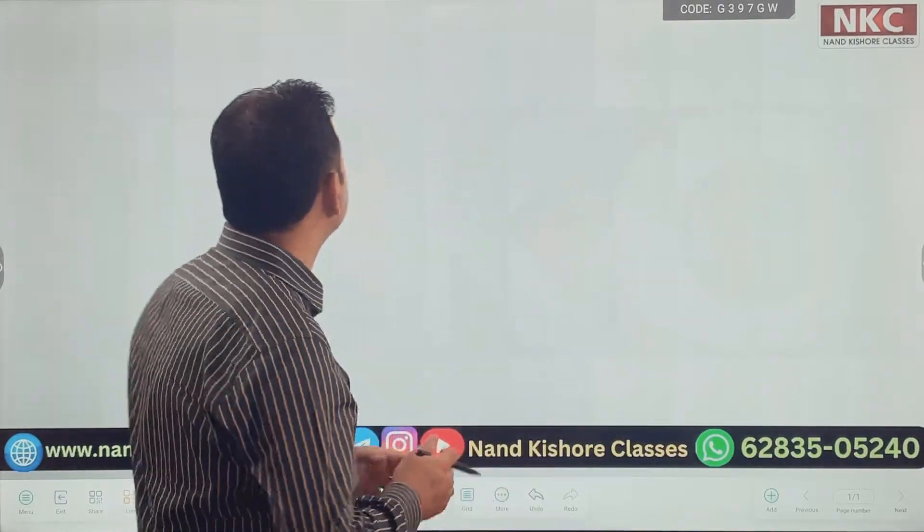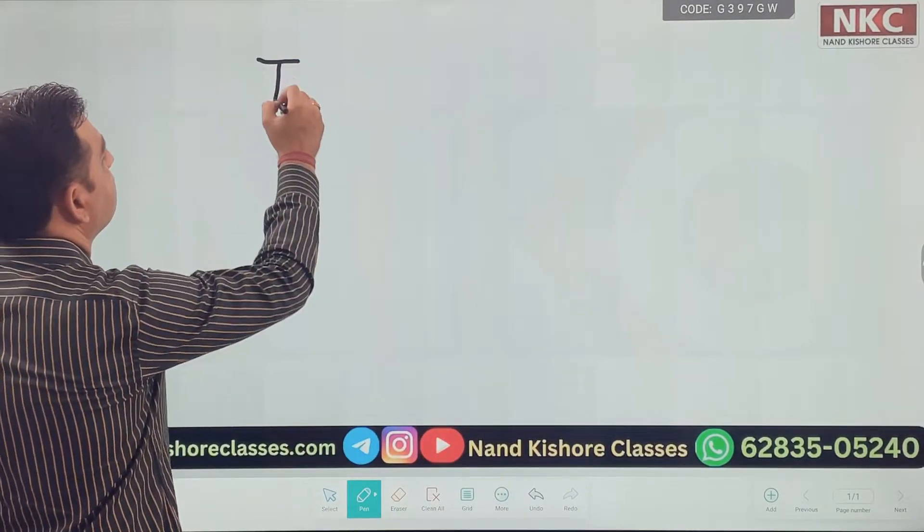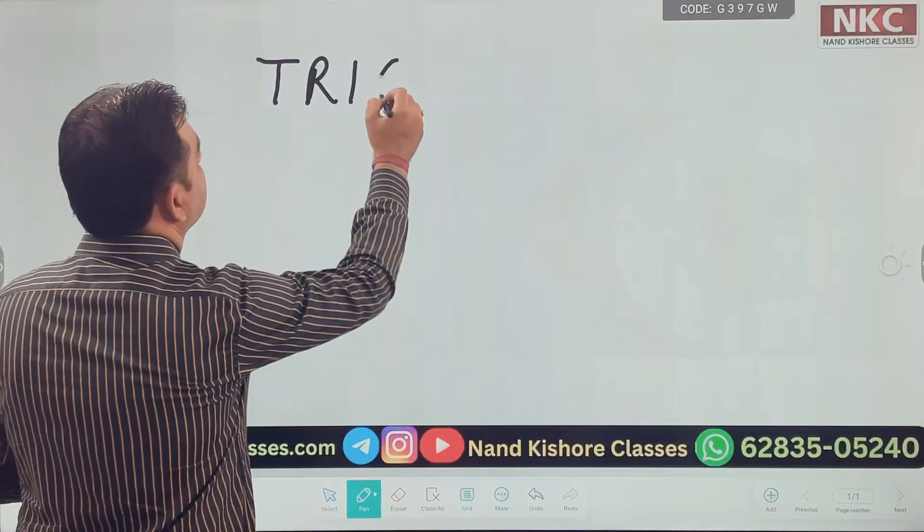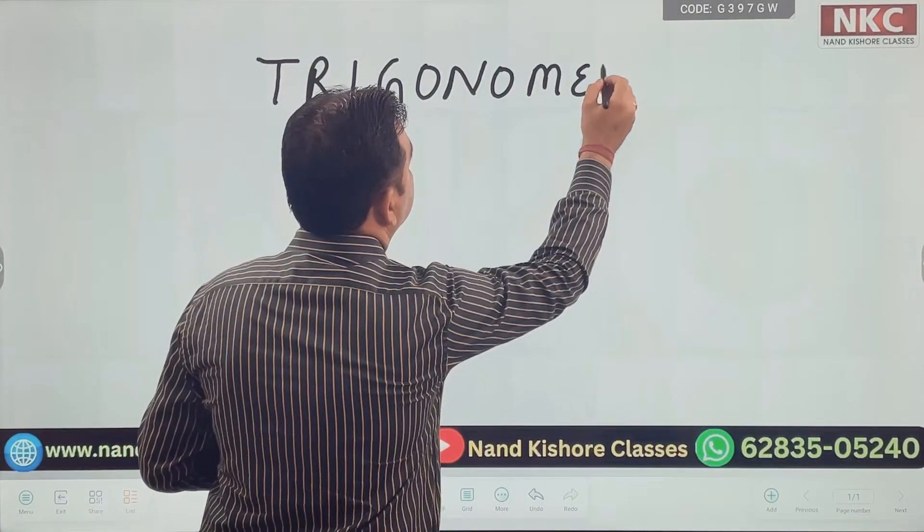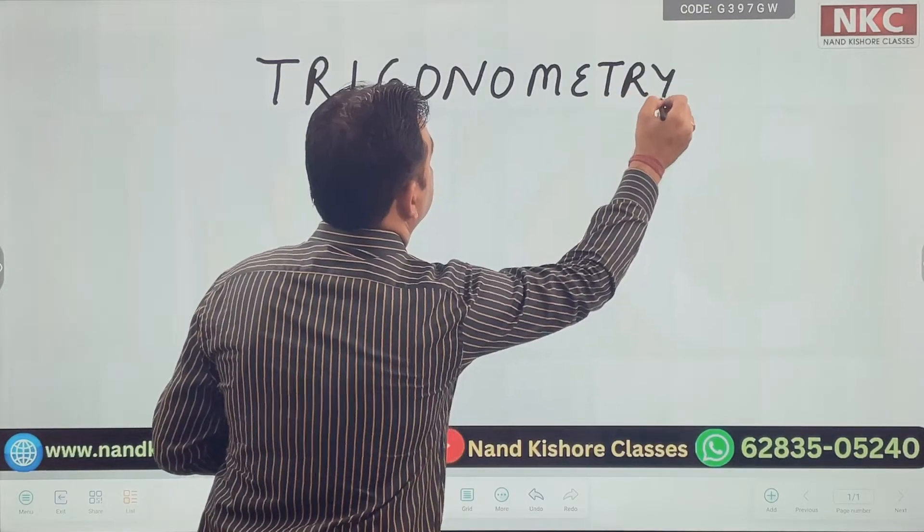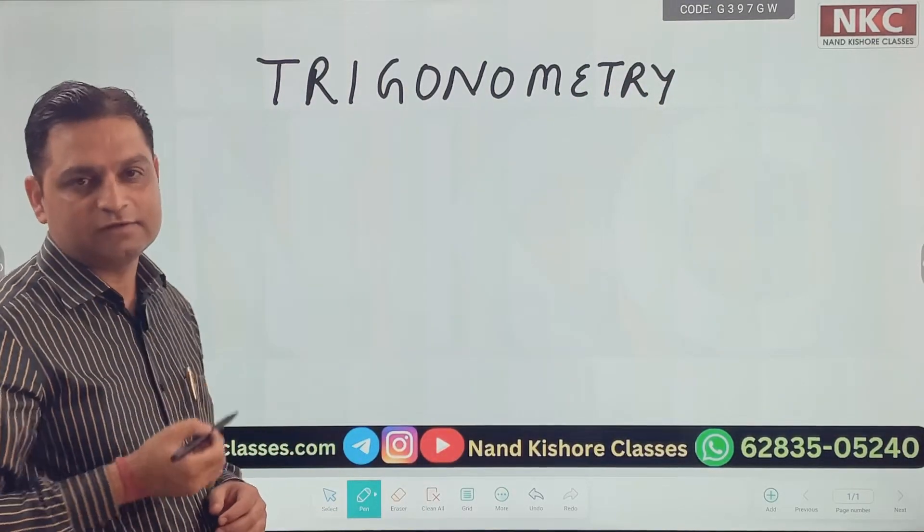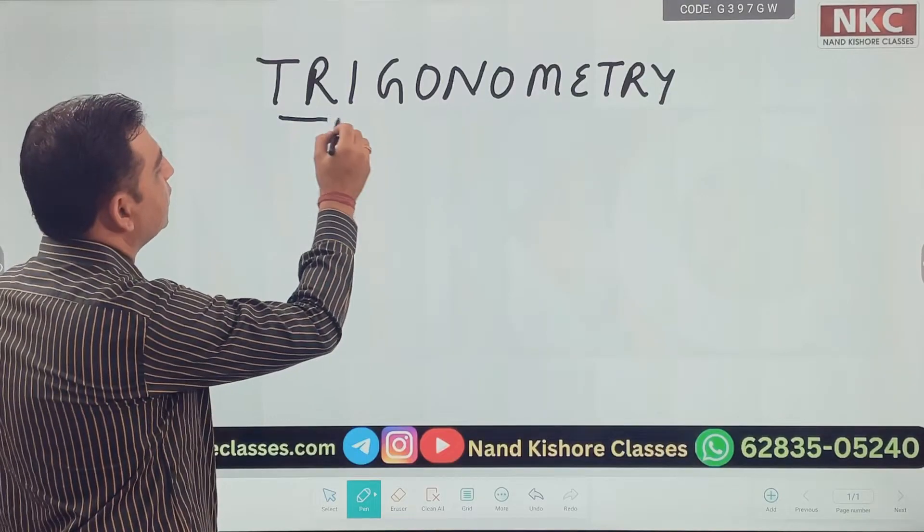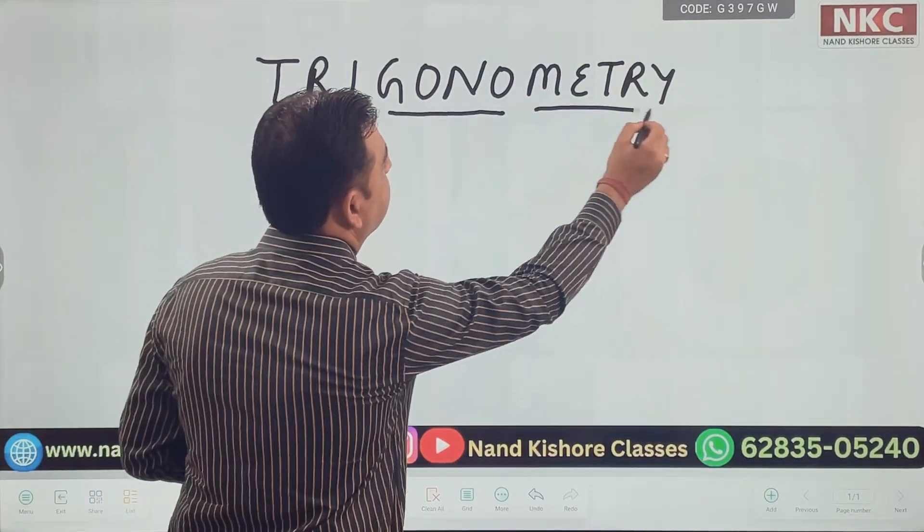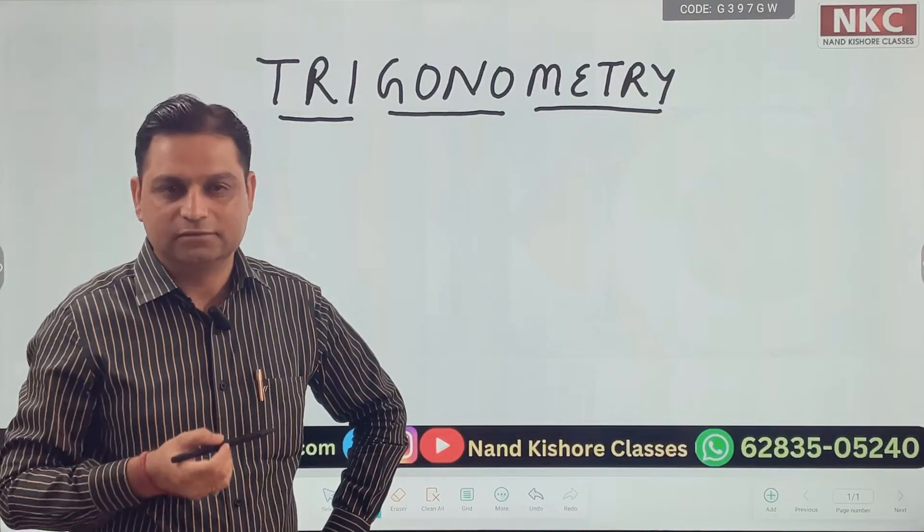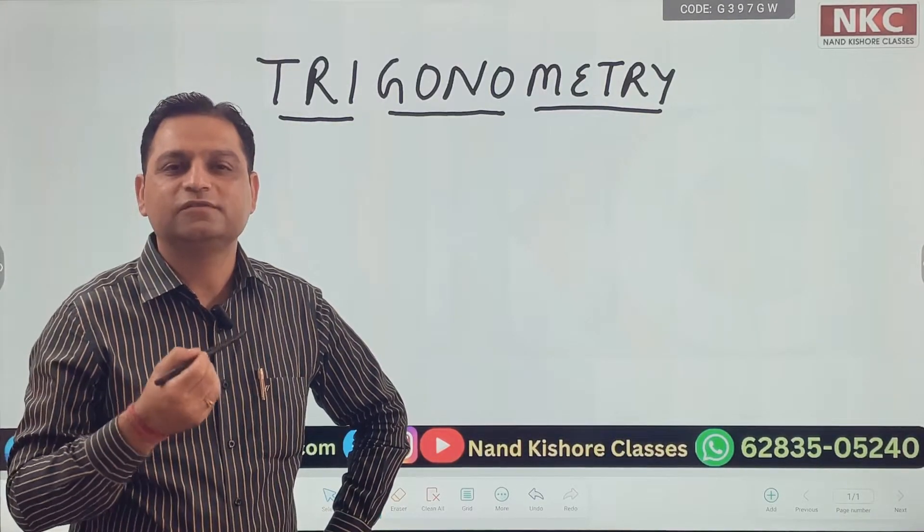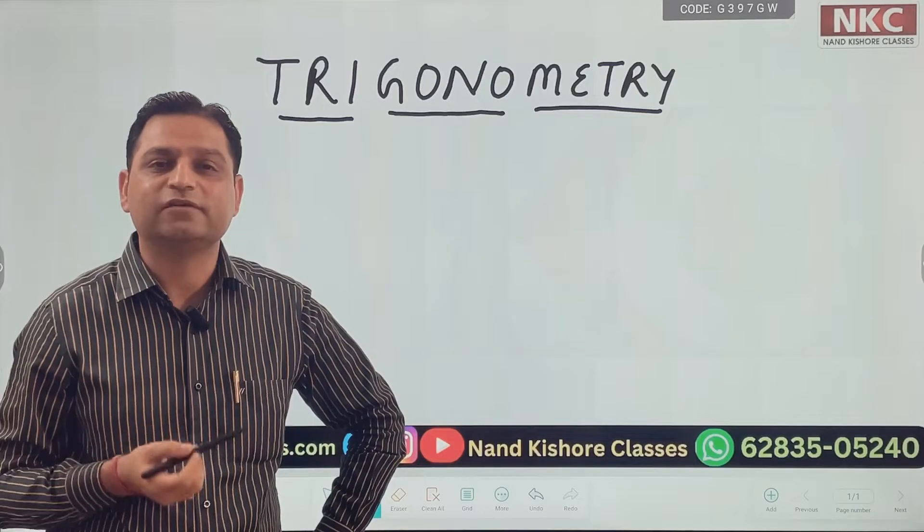First of all, trigonometry, if I write its name, please read it. Trigonometry, this name, it has its meaning itself. Tri means three. Gono means sides. Metry means measurement. Measurement of three sides or measurement of three angles.